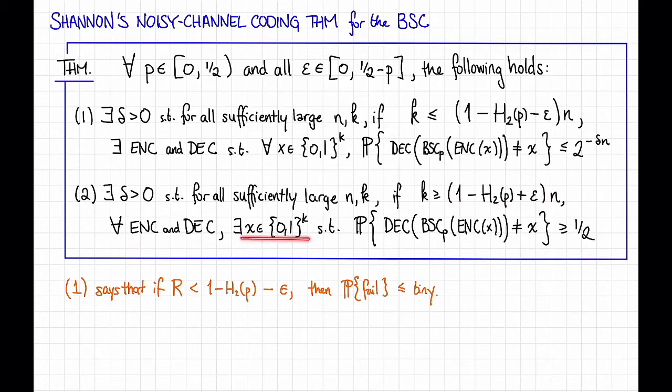there exists some input x on which the decoder is likely to mess up. That is, the probability that the output of the decoder is not equal to the correct message x is greater than or equal to a half. So part 2 is saying that if the rate is a bit bigger than 1 - H(P), then the probability of failure is large, at least as large as a half.